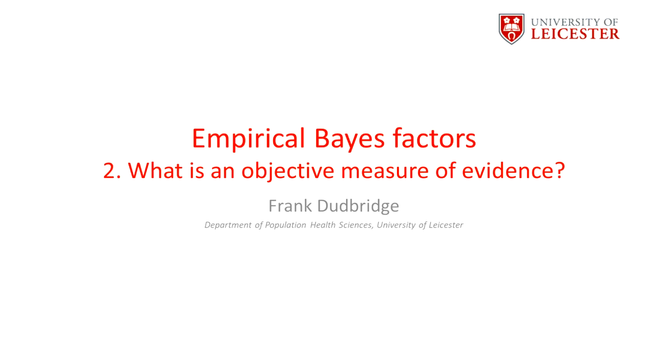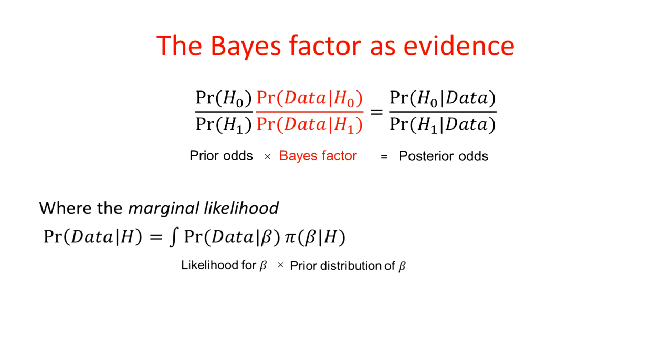What is an objective measure of evidence? In Bayesian hypothesis testing, the evidence will update the prior odds to the posterior odds.